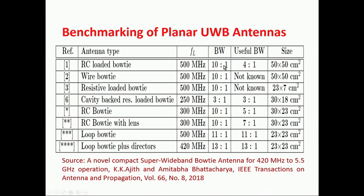Comparing GPR antenna designs: earlier antennas operated from 250 MHz but with only 3:1 bandwidth. The RC bow tie gives 10:1 bandwidth, improved to 5:1 usable, and with the metamaterial lens to 7:1. The loop bow tie achieves 11:1 from 500 MHz, and the loop bow tie with directors achieves 13:1 — the best result to date — with the entire impedance bandwidth being usable as well. This represents a remarkable improvement making it an excellent GPR antenna.